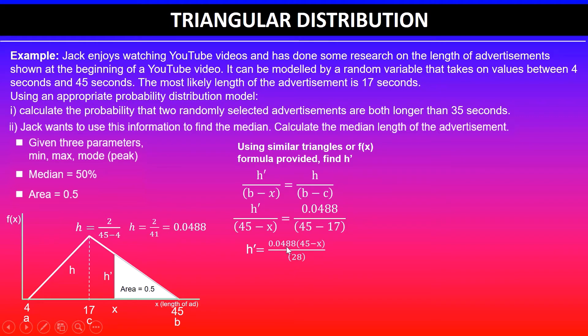Times that, the whole thing is divided by 28 (the difference between 45 and 17). Now I can simplify this here because 0.0488 divided by 28 simplifies to 0.00174 into 45 minus x. This is the h', which is the height of the smaller triangle.